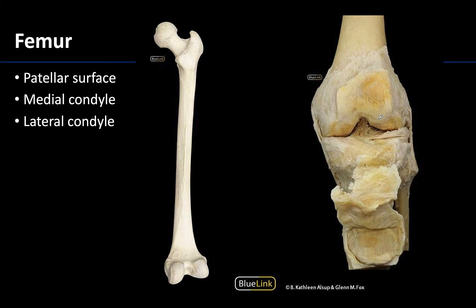You cannot have a session on the knee joint without talking about the bony parts that form the knee joint. Recall the knee joint is going to be composed of two tibiofemoral articulations, which you can see here with some of the associated structures, as well as a patellofemoral articulation.